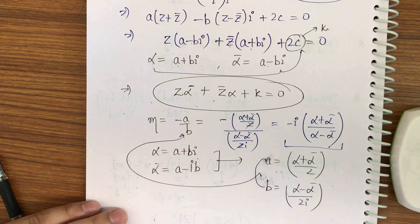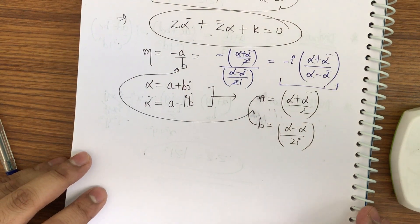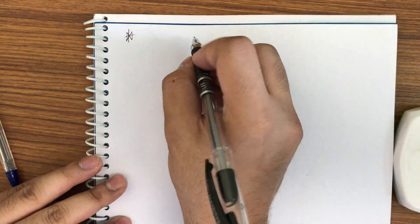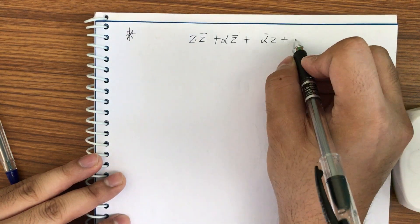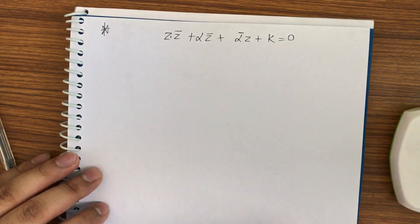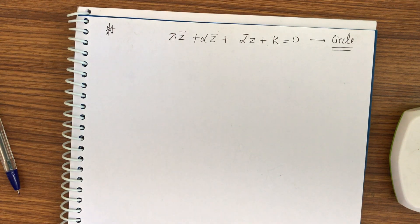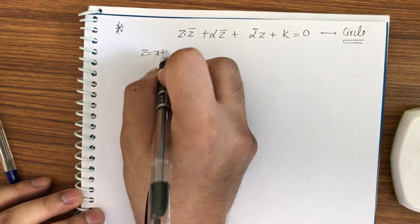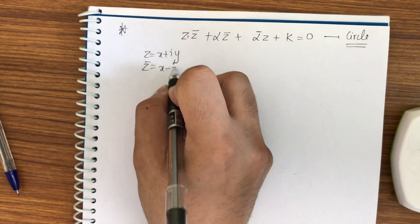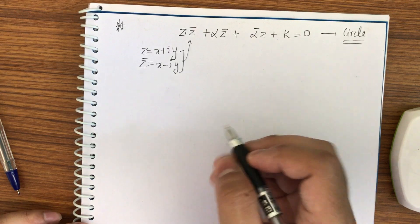Now the next topic is circles. In the complex plane, the equation of a circle is given as z·z̄ + α·z̄ + ᾱ·z + k = 0. I will show how to convert this into coordinate form. We have z = x + iy and z̄ = x - iy. Substituting: z·z̄ = |z|² = x² + y², and α = a + ib.